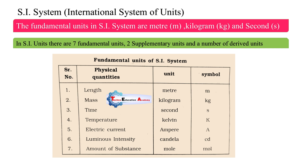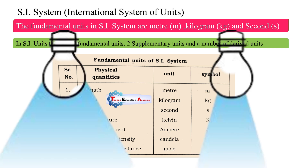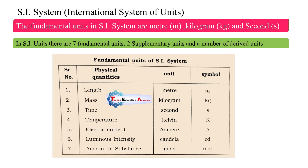Electric current — its unit is ampere. Luminous intensity means the quantity of light emitted by an LED or bulb in a particular direction per unit solid angle — it is called luminous intensity, its unit is candela and the symbol is cd. For molecular mass, we use the amount of substance, whose unit is mole. These are all the fundamental units of the SI system.